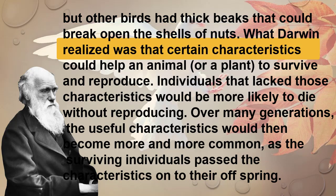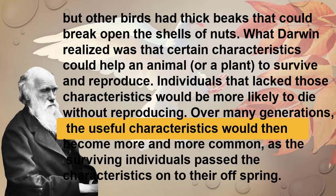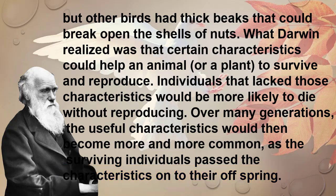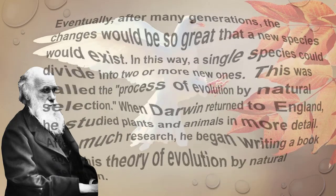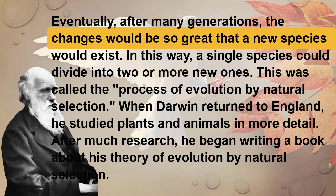What Darwin realized was that certain characteristics could help an animal or a plant to survive and reproduce. Individuals that lacked those characteristics would be more likely to die without reproducing. Over many generations, the useful characteristics would then become more and more common, as the surviving individuals passed those characteristics on to their offspring.